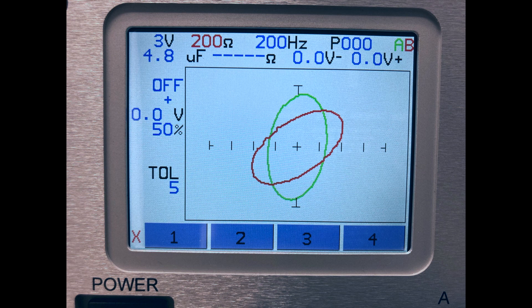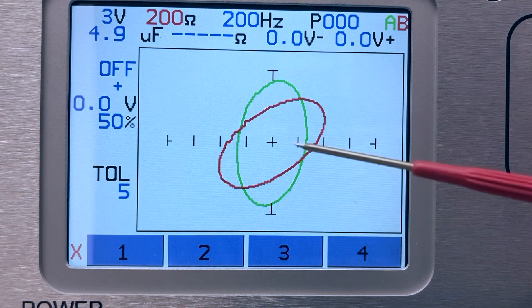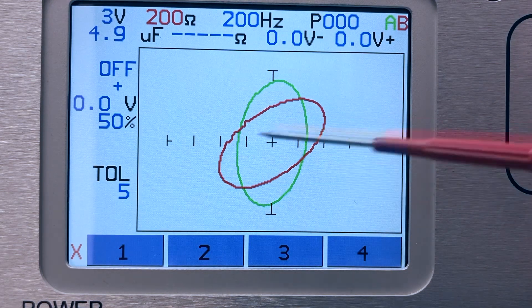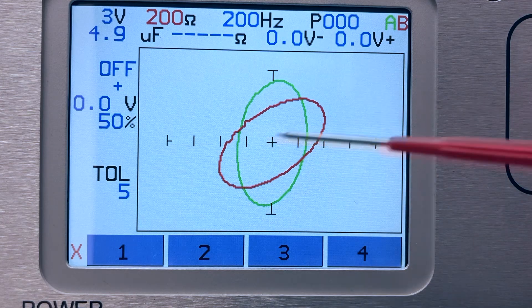Degradation in capacitors is a common problem. This signature in green shows a good 100 microfarad capacitor compared to a degraded one shown in red. Note the change in width and angle. This type of failure is sometimes referred to as leakage.